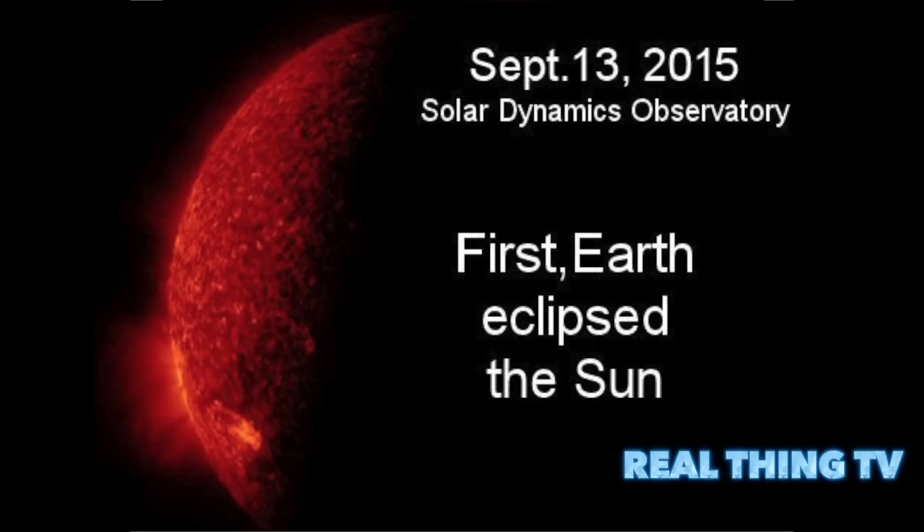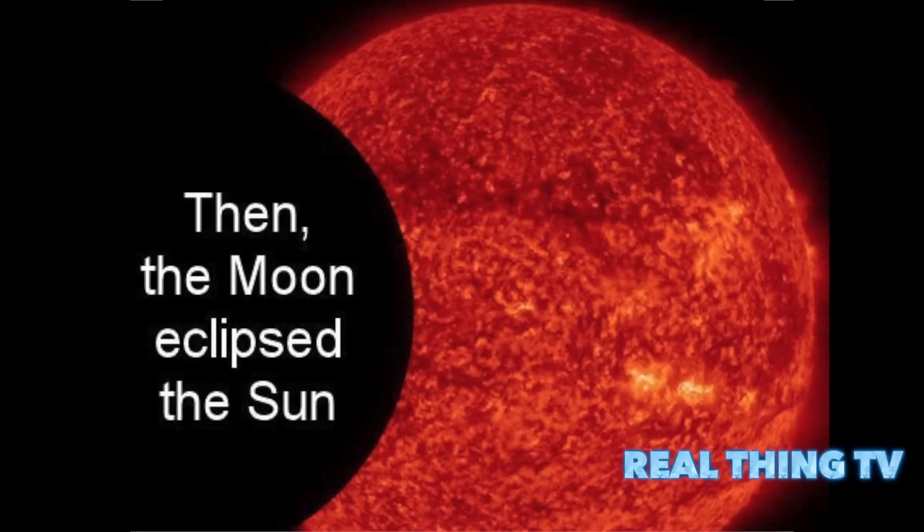The Earth passed directly between the Sun and SDO. The observatory watched as the body of our planet moved slowly across the face of the Sun, producing a near blackout.